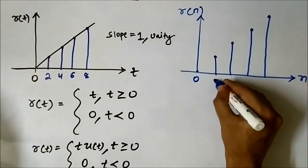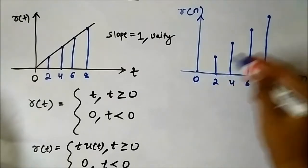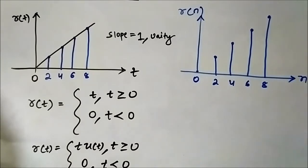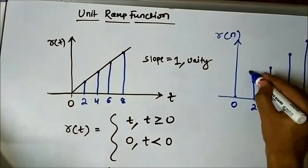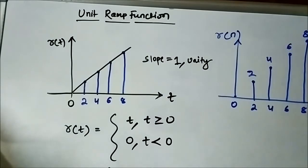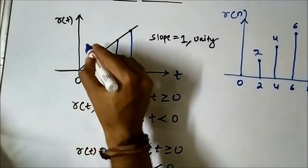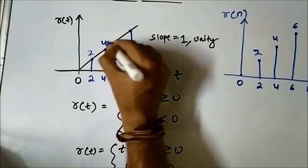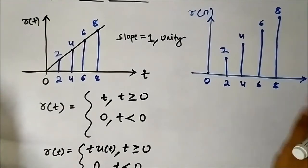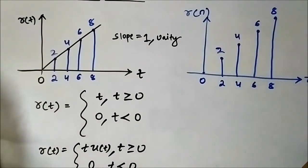This is the discrete time representation of the ramp sequence. The values are at 2, 4, 6, and 8 seconds. Since R(t) = t, at 2 seconds the value is 2, at 4 seconds it is 4, at 6 seconds it is 6, and at 8 seconds it is 8. The magnitude of the ramp sequence at distinct time instances 2, 4, 6, 8 will be 2, 4, 6, 8.